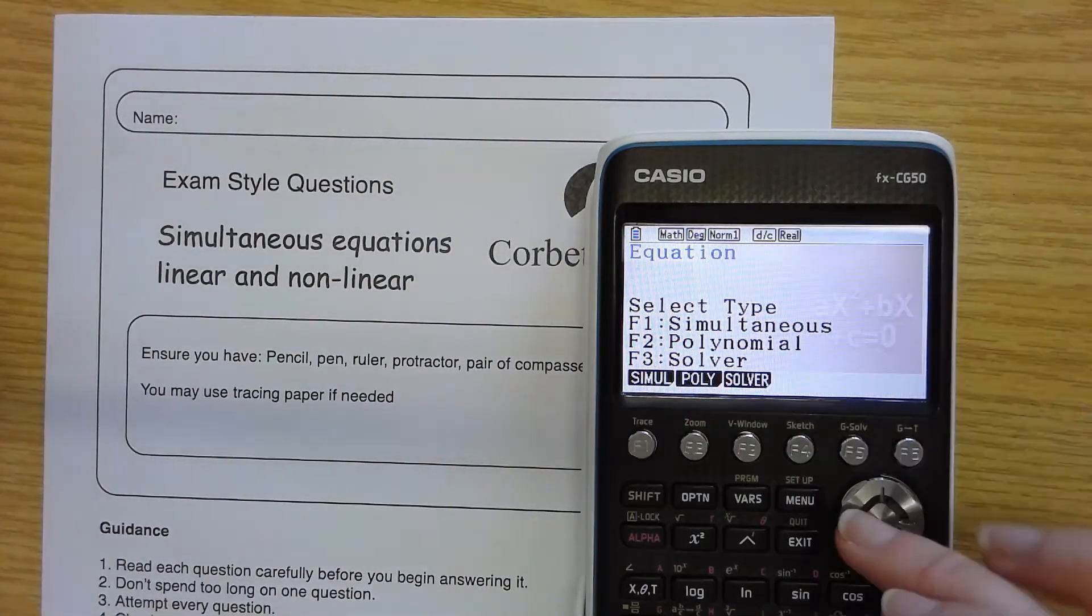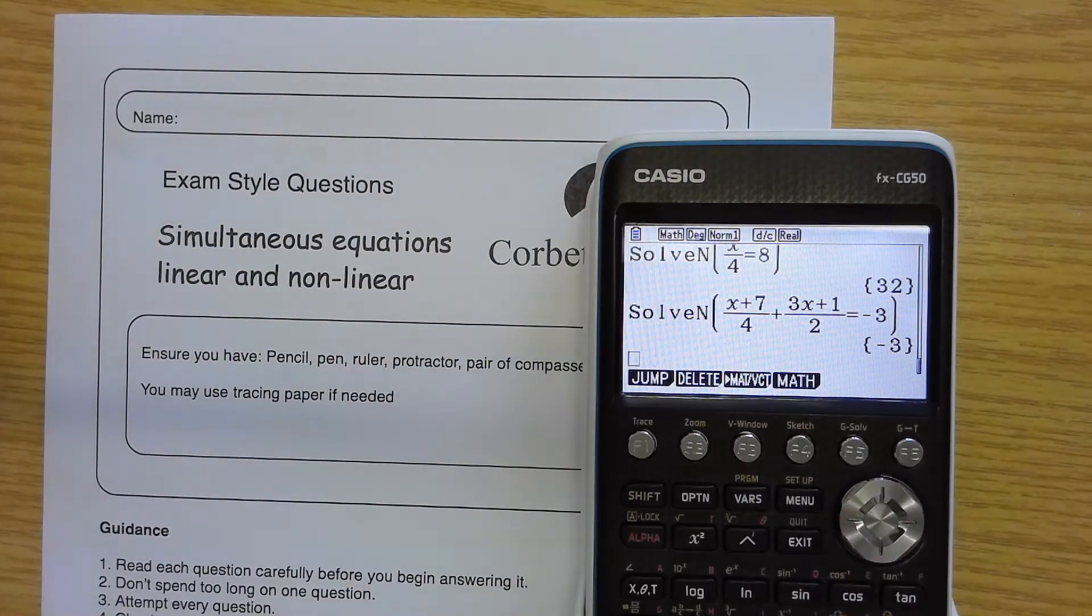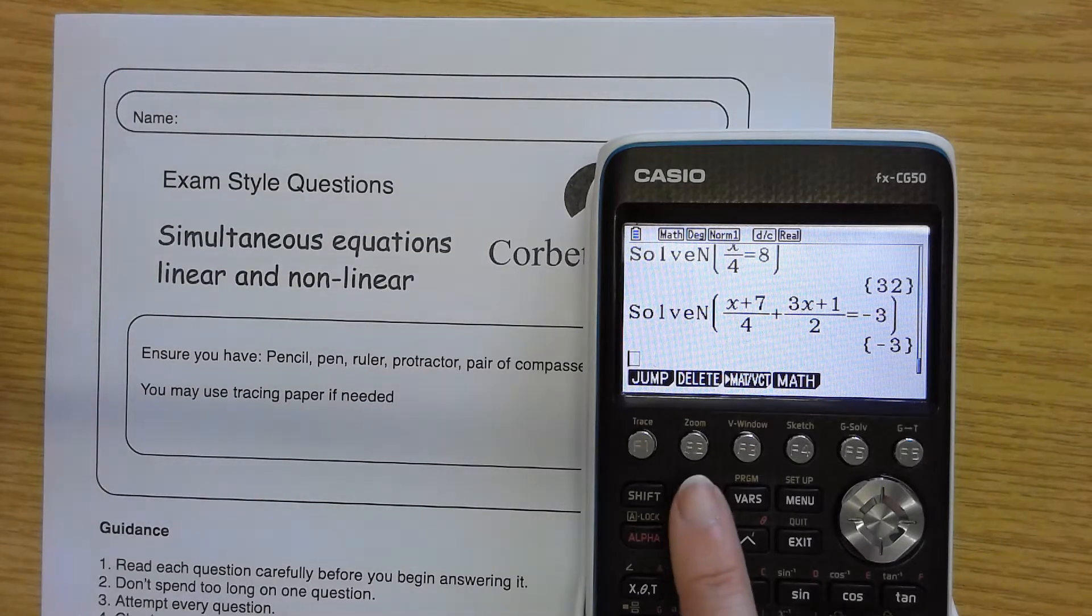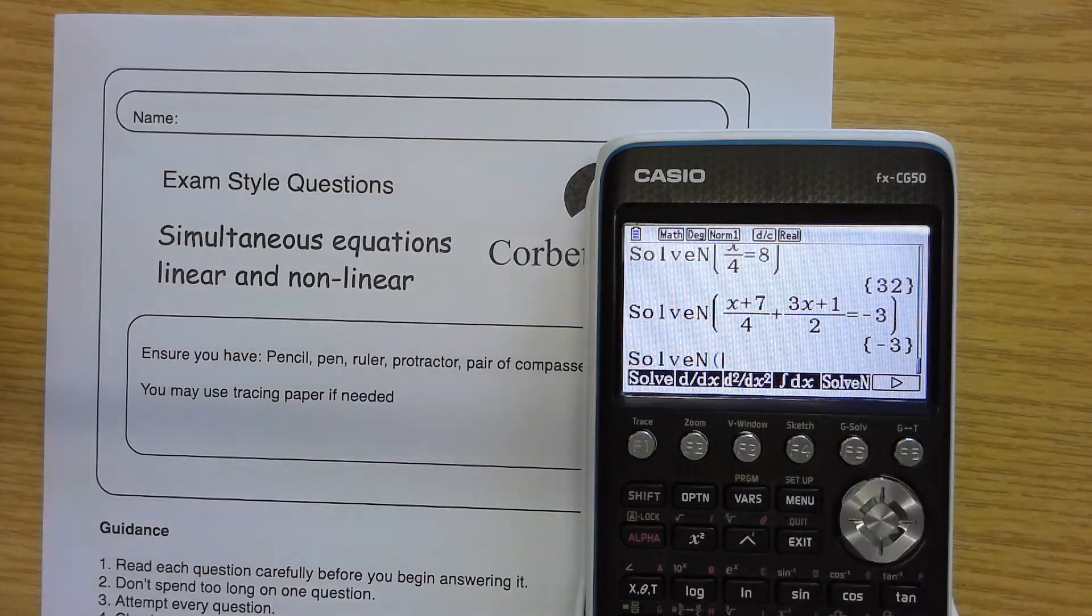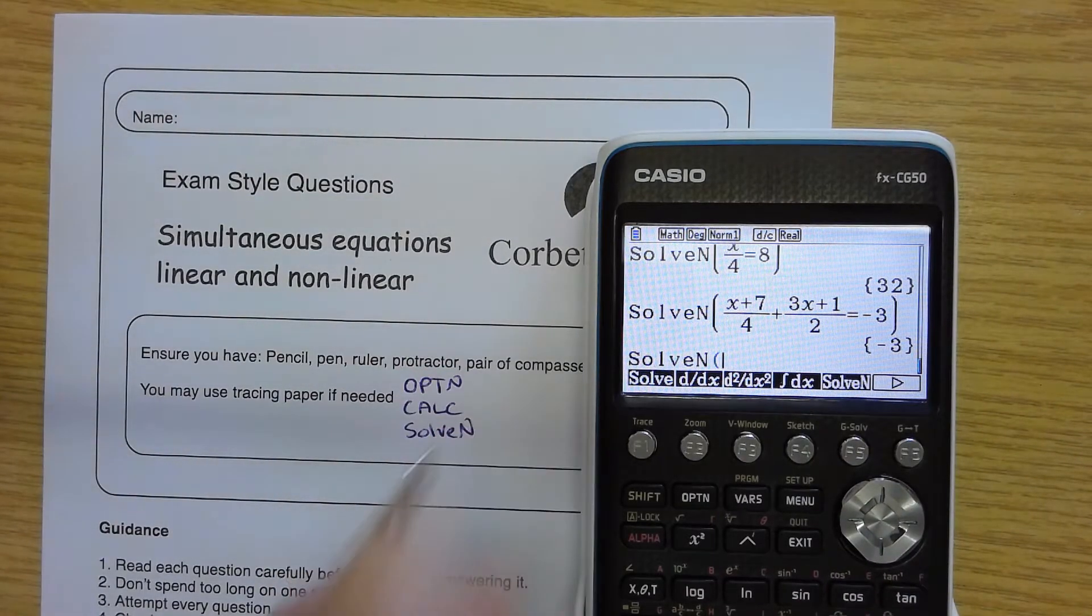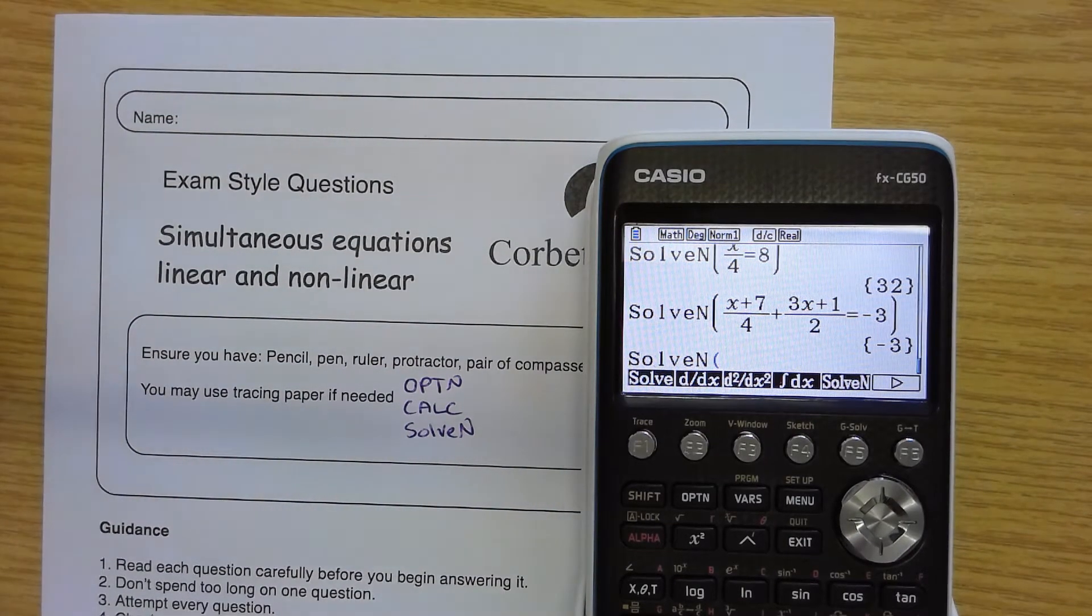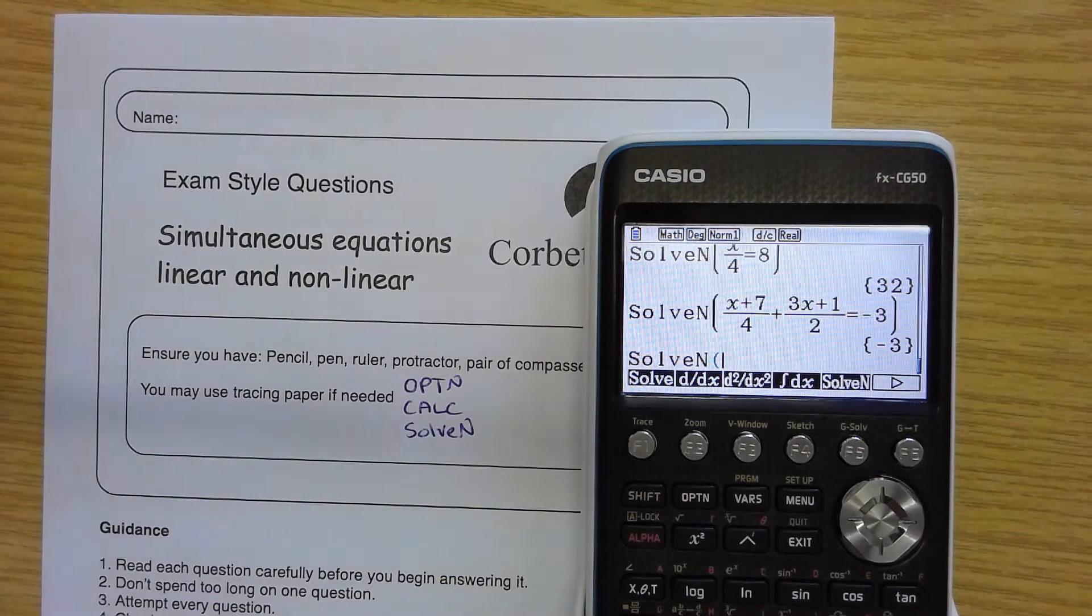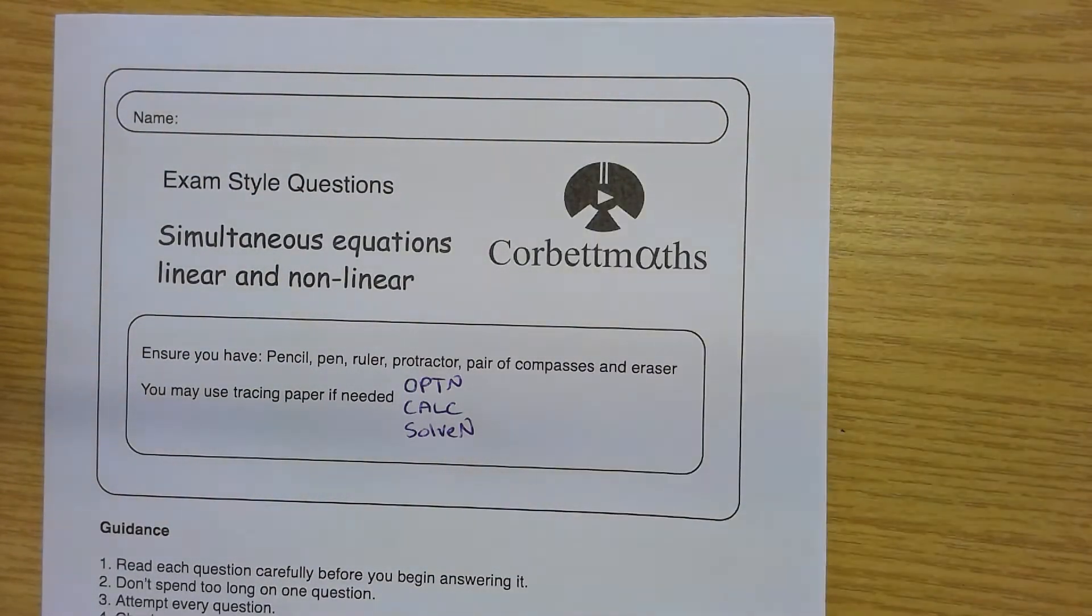The way I do it, there may be others, is I go back into the run matrix. I go back into this main one here and I use the solve N. The sequence for that is option, calculate, solve to find a number. Now with this, we need an equation, a single equation involving one variable. So how do we do that?